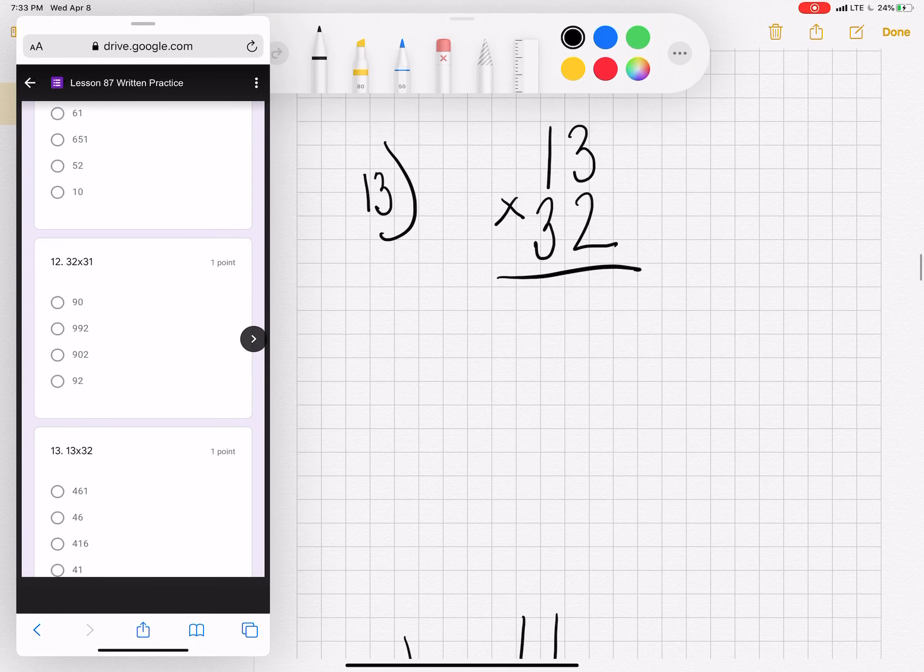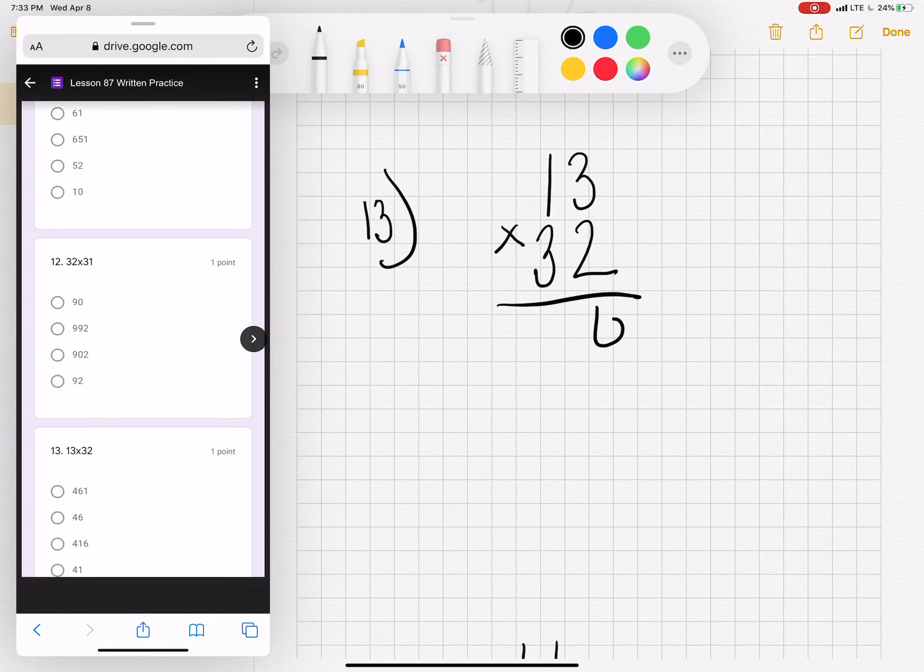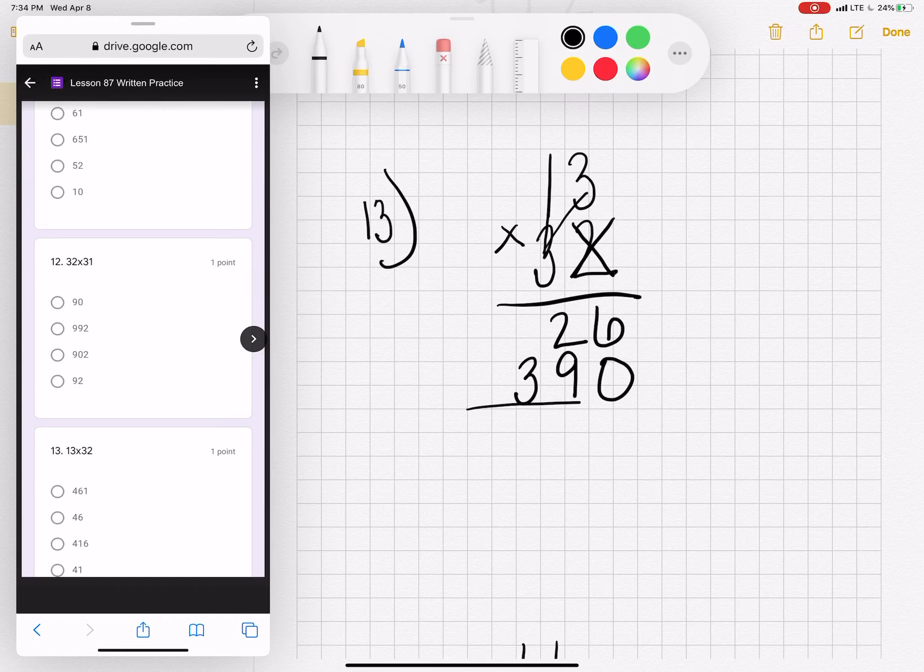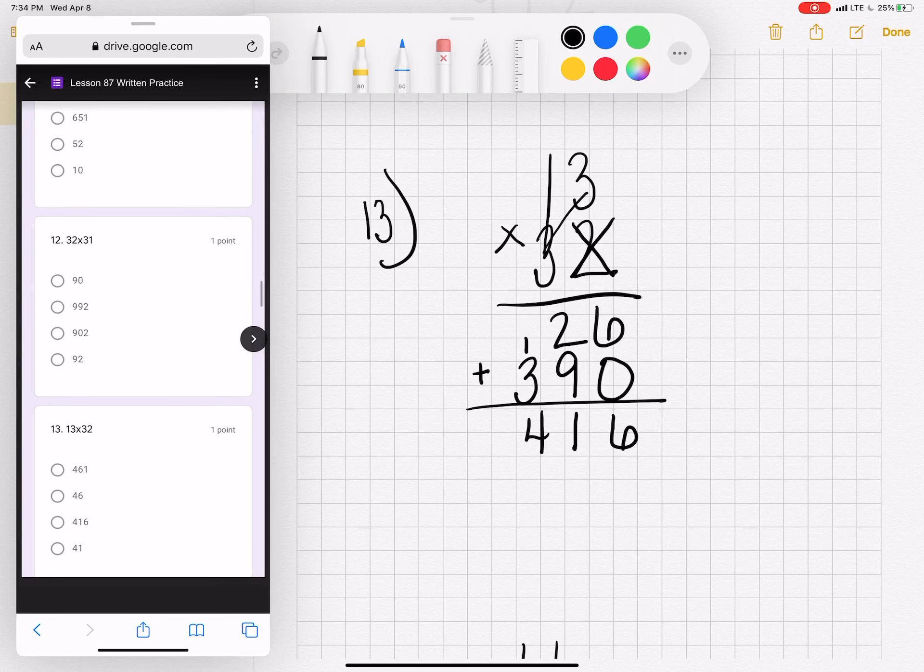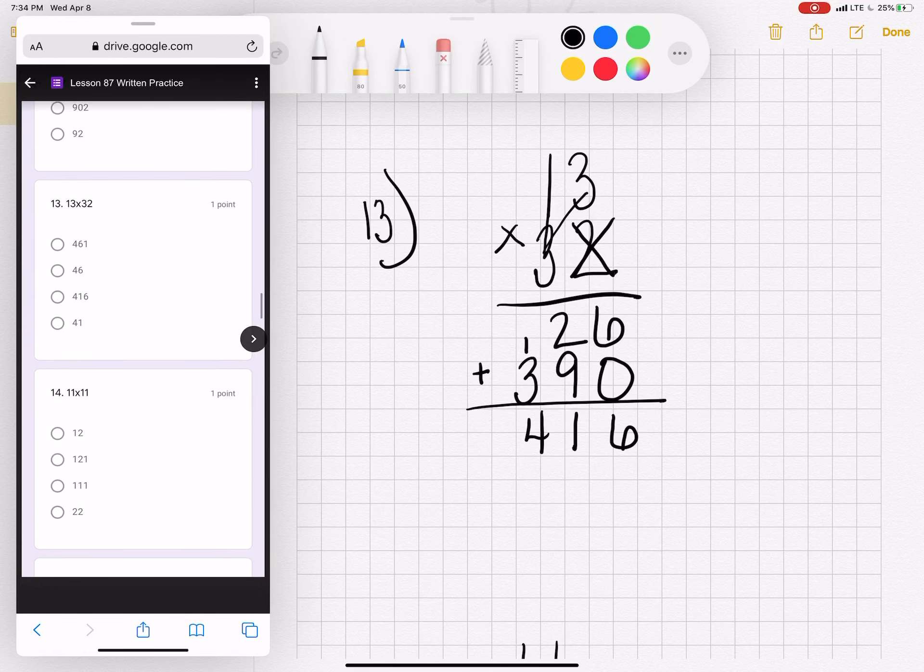Number 13. Three times two is six. Two times one is two. Do the two things I taught you. Mark it out. Put a zero. Now three times three, nine. Three times one, three. Add them together. Six plus zero, six. Nine plus two, eleven. Three plus one is four. Number 13 is 416.